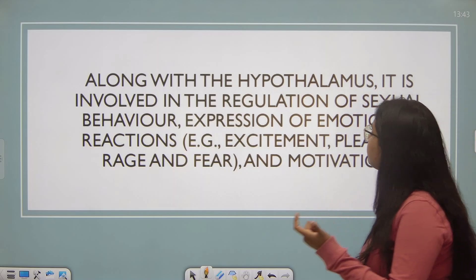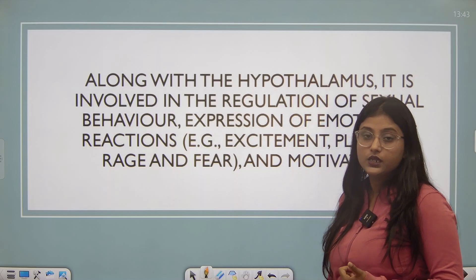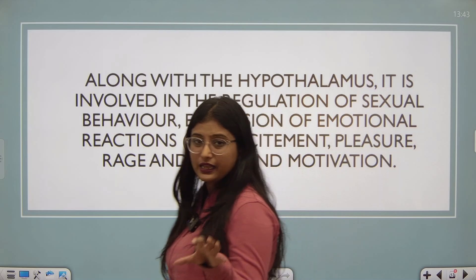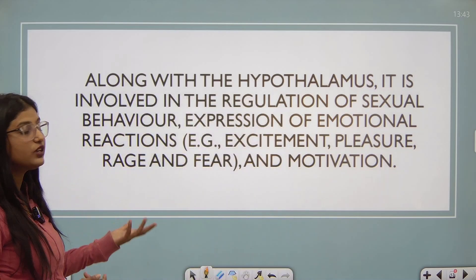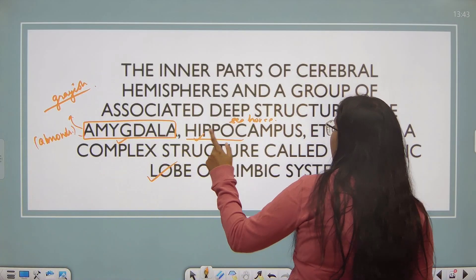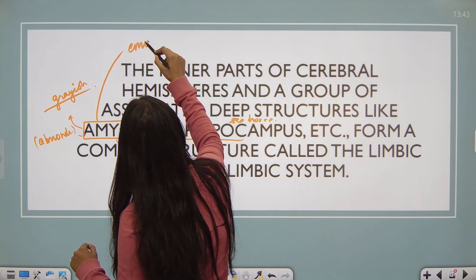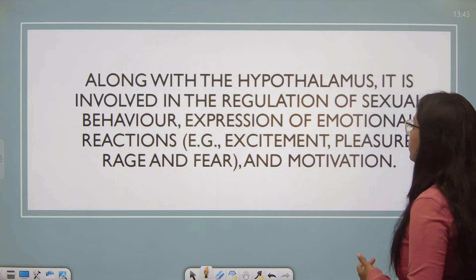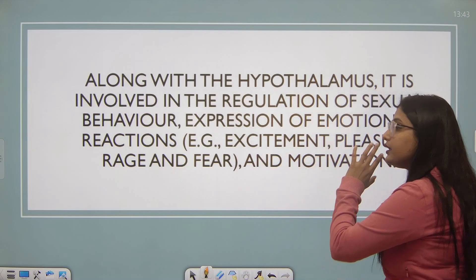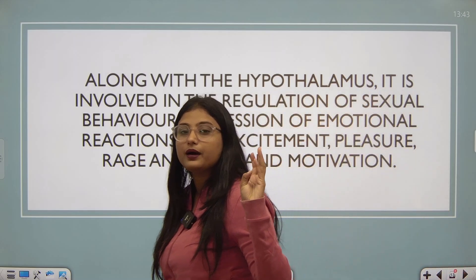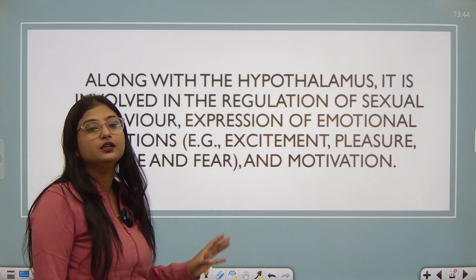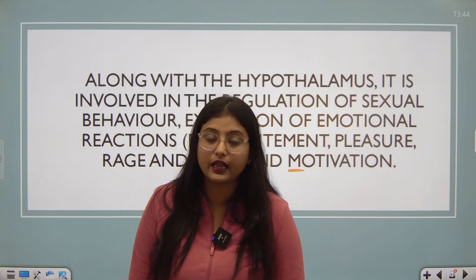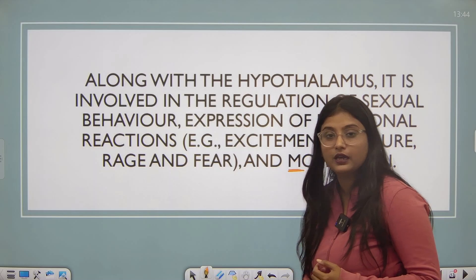The limbic system, along with the hypothalamus, is involved in the regulation of sexual behavior, expressions of emotional reactions — amygdala controls emotions like laughing, crying and anger. Excitement, pleasure, rage, fear — all of these are coordinated by the amygdala, hippocampus and hypothalamus together forming the limbic system, as well as motivation. It is important to remember which structures perform which functions, as this is directly from the NCERT.